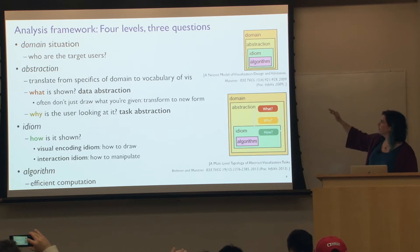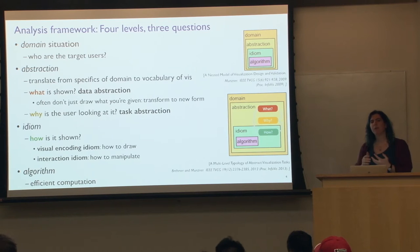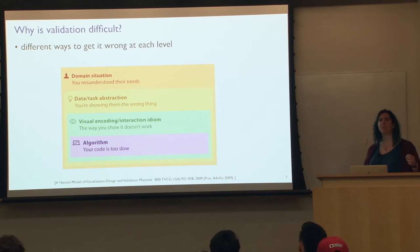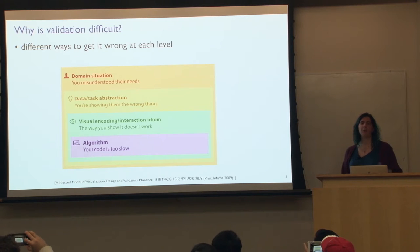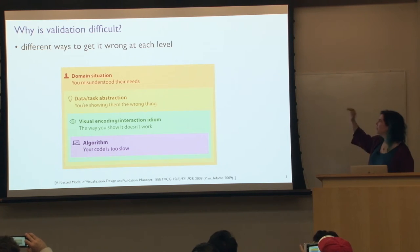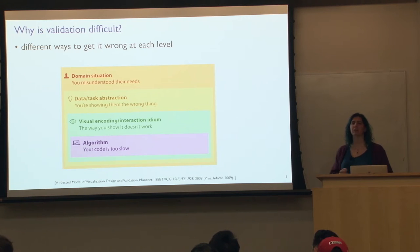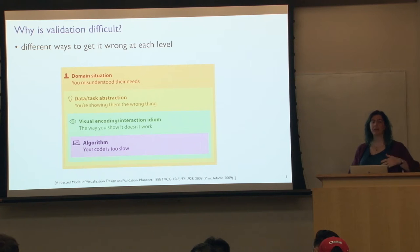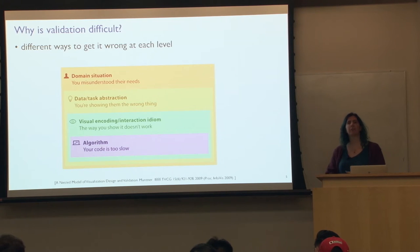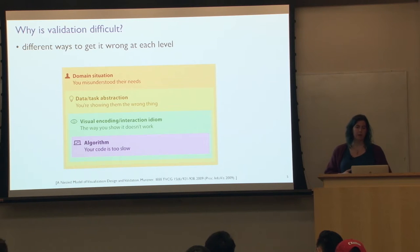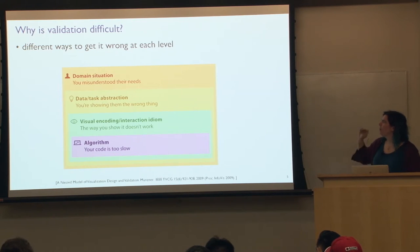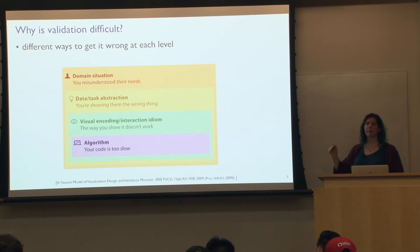Separating according to these levels — domain, abstraction, idiom, and algorithm — allows us to address hard problems of how things can go wrong. At the domain situation level, you might misunderstand or mischaracterize the needs of users, whether because you never talk to them or don't talk to them enough. Introspection alone won't tell you what users need — you need a mix of talking to them, thinking, and observing. At the abstraction level, you could get the data abstraction wrong and show the wrong thing.